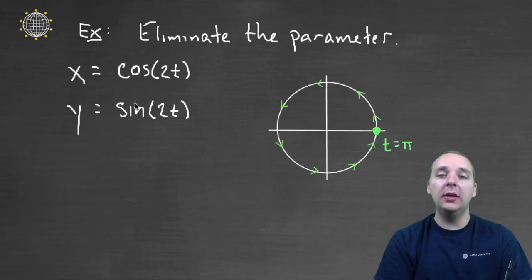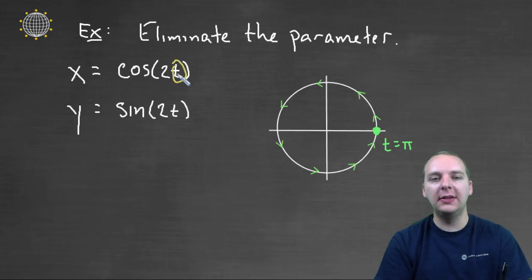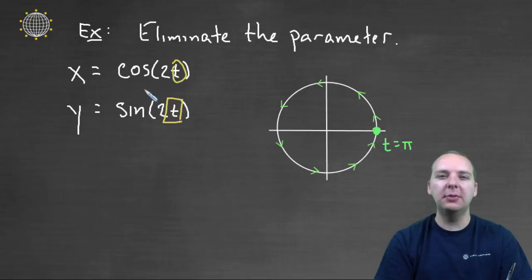Well, one thing you can do to eliminate the parameter that we discussed in a previous video is you could solve for the T in one equation and then substitute that value or that expression in for T in the other expression. But for something like this, that would be pretty bad, honestly, because if you look at this, if you solve for T,